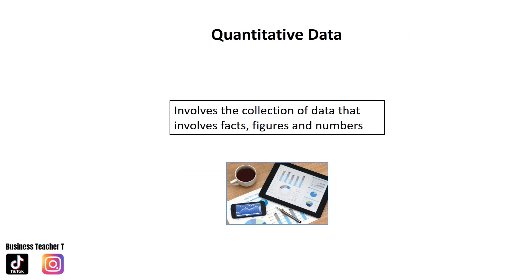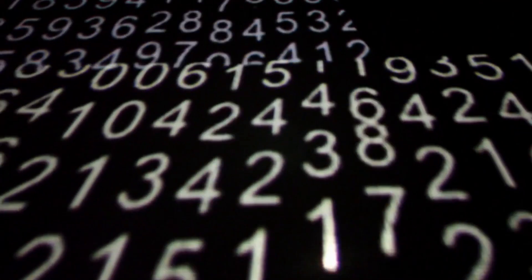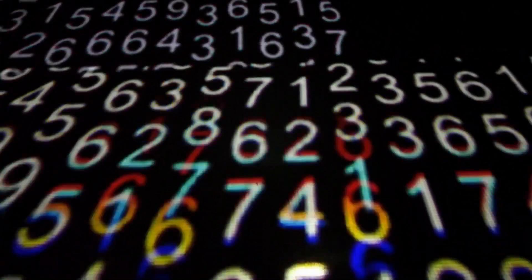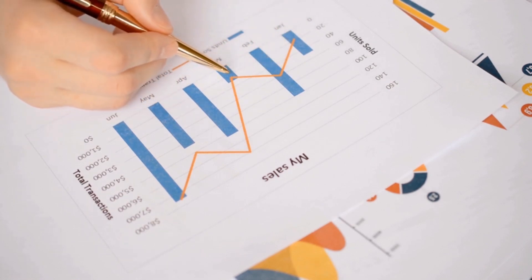Onto quantitative data. This type of data involves a collection of data that involves facts, figures, and numbers. In order to help you remember what this term means — whenever you hear the word quantitative, think quantity, think numbers. This type of research can be measured and reduced to a number, and it often involves collecting statistical data.